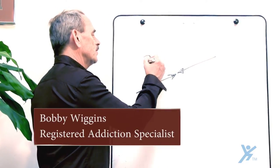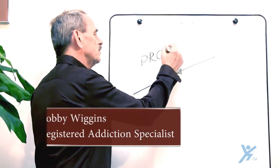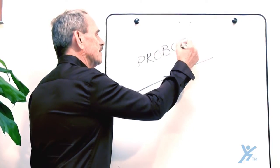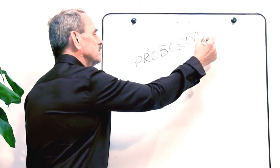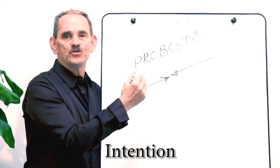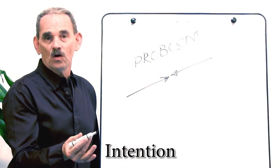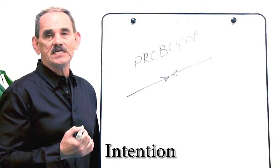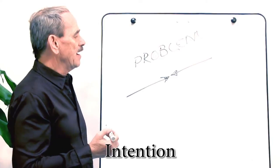For just a couple minutes here, I want to define what a problem is, and we'll give a couple of examples of that. First of all, when it comes to a problem, you have an intention. That intention is usually to reach some sort of goal, some sort of succeeding in life, something like that.